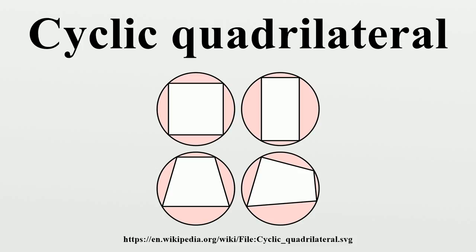Brahmagupta quadrilaterals: a Brahmagupta quadrilateral is a cyclic quadrilateral with integer sides, integer diagonals, and integer area. All Brahmagupta quadrilaterals with sides A, B, C, D, diagonals E, F, area K, and circumradius R can be obtained by clearing denominators from expressions involving rational parameters T, U, and V.